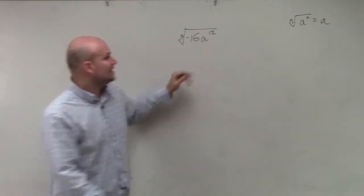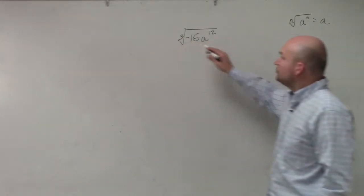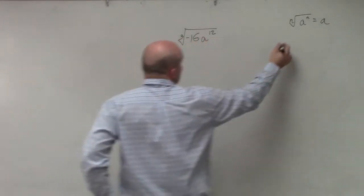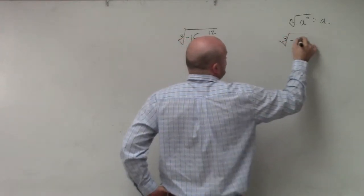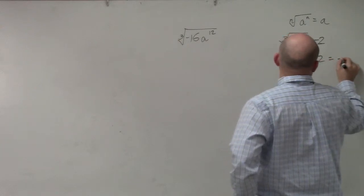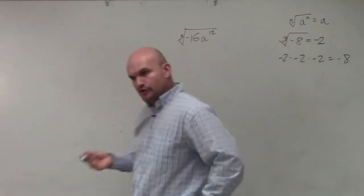Odd root, you can. Because let's think about this. The cube root of negative 16, or let's just think about this as a number, the cube root of negative 8. That is negative 2. Because negative 2 times negative 2 times negative 2 equals negative 8. Do you agree?